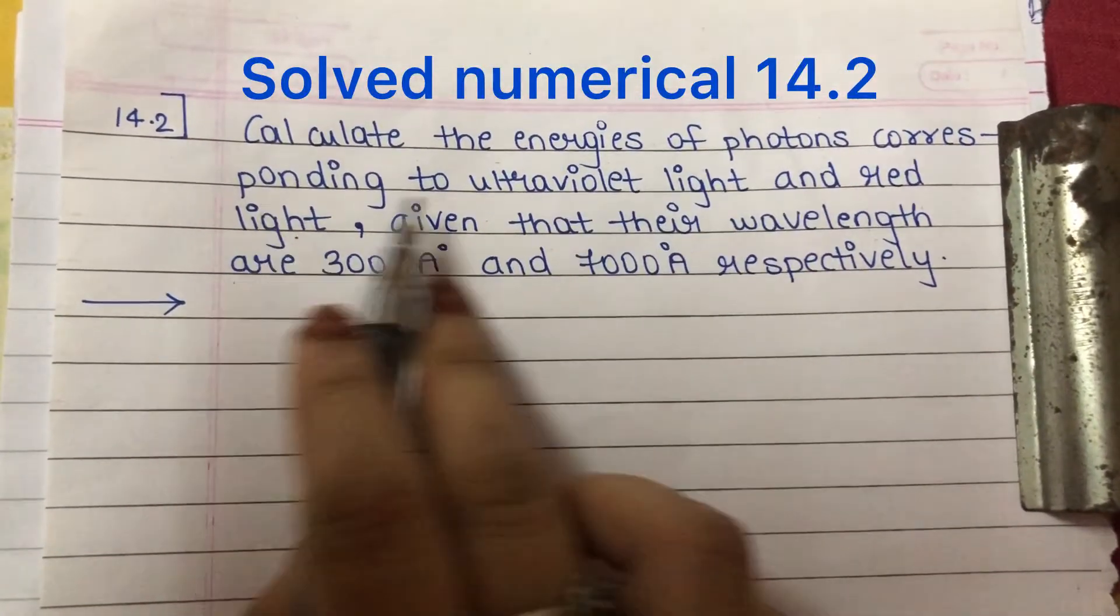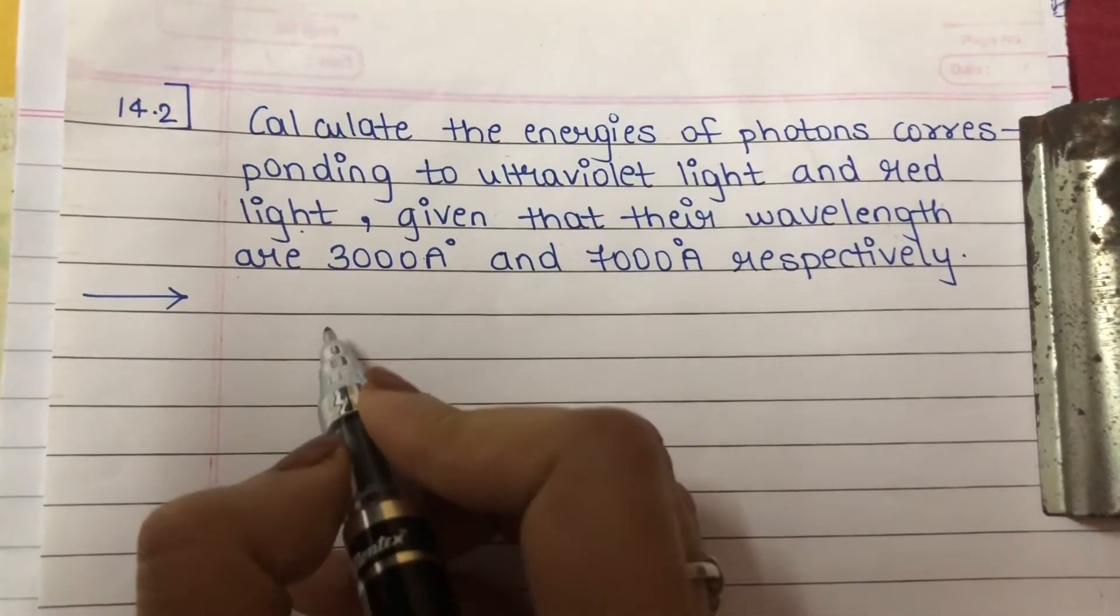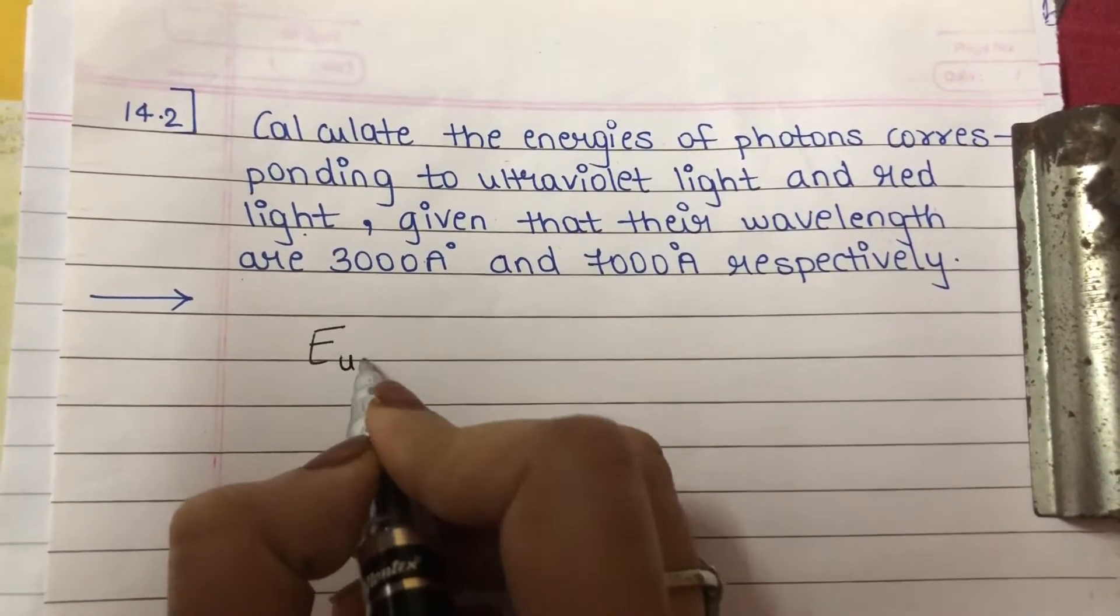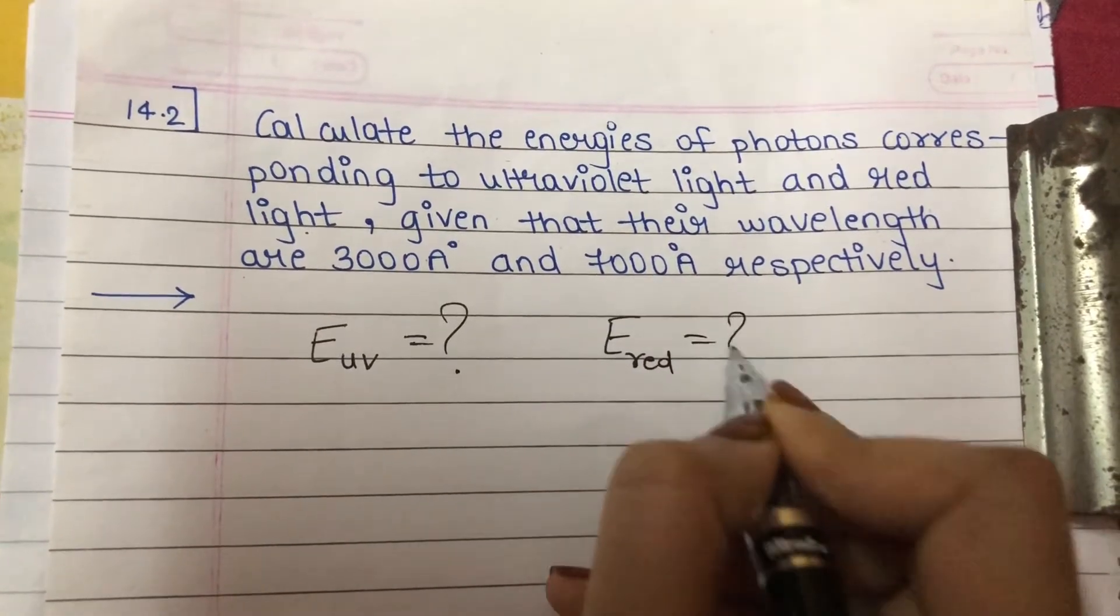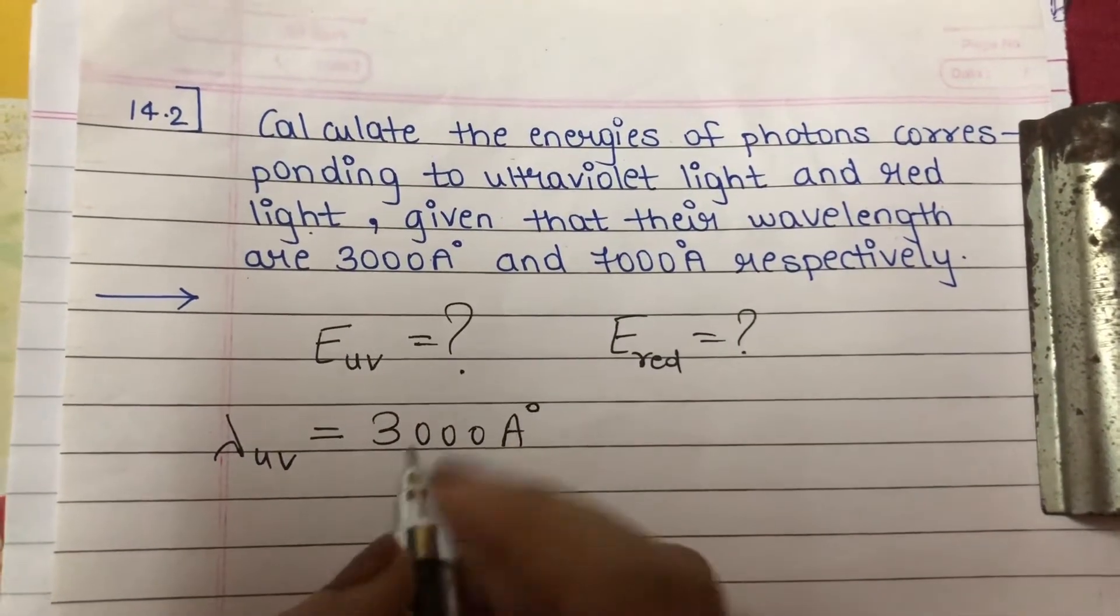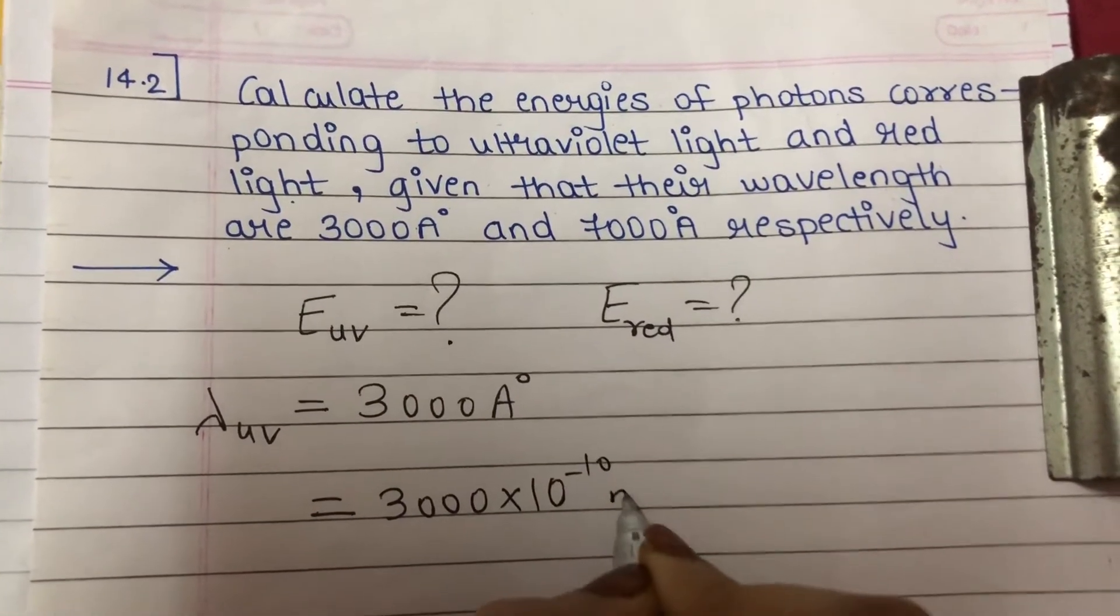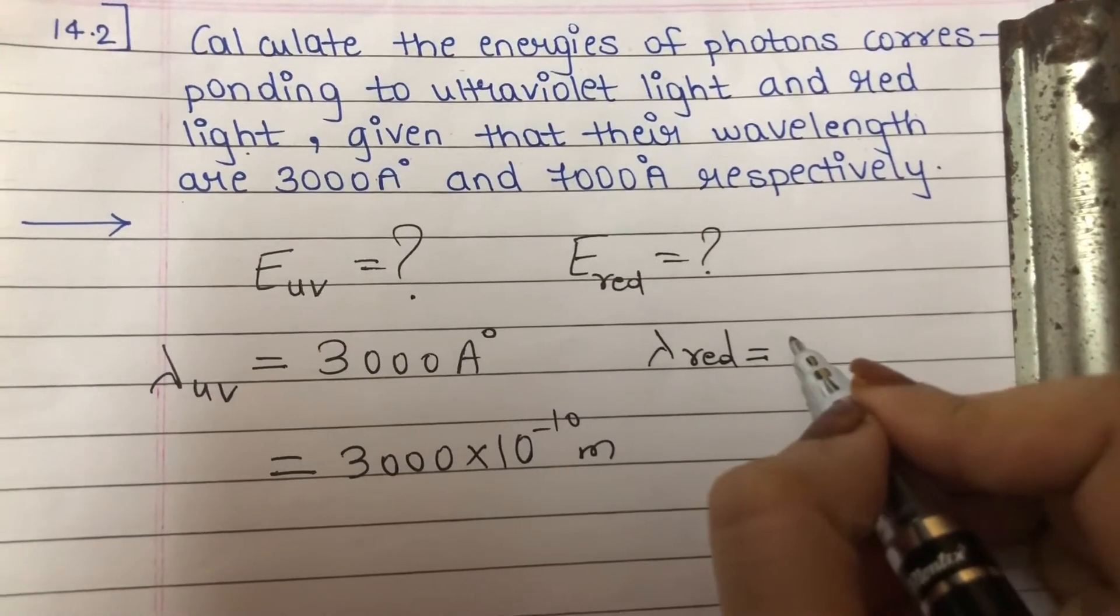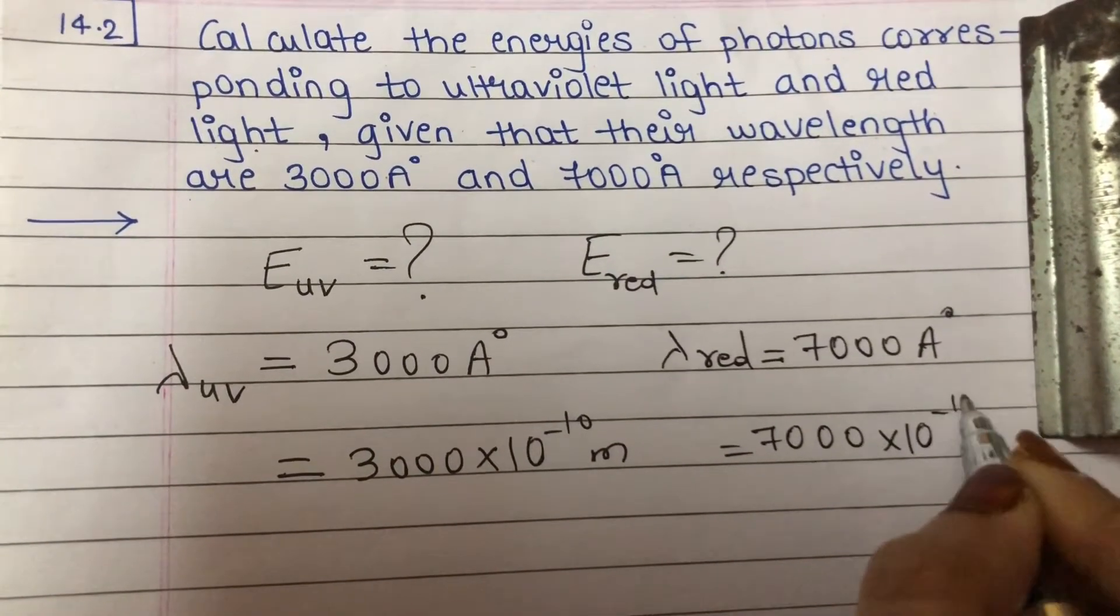Calculate the energies of photons corresponding to ultraviolet light and red light. So here we will be calculating energies of photons corresponding to ultraviolet light, UV, and red light. Given that their wavelengths are: wavelength for UV light is 3000 angstrom, that is 3000×10^-10 meters, and 7000 angstrom respectively for red light, which is 7000×10^-10 meters.